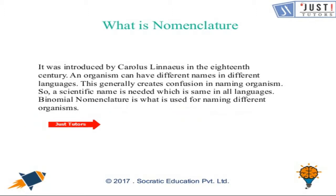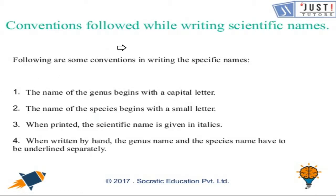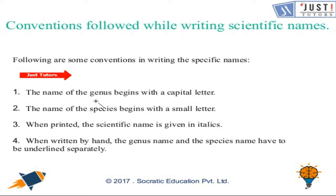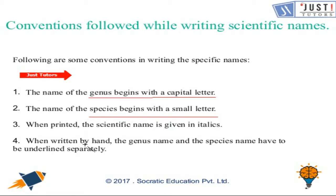Let's have a look at the conventions we are supposed to follow while writing scientific names. The following conventions apply: the name of the genus begins with a capital letter; the name of the species begins with a small letter; when printed, the scientific name is given in italics; when written by hand, the genus name and the species name have to be underlined separately.